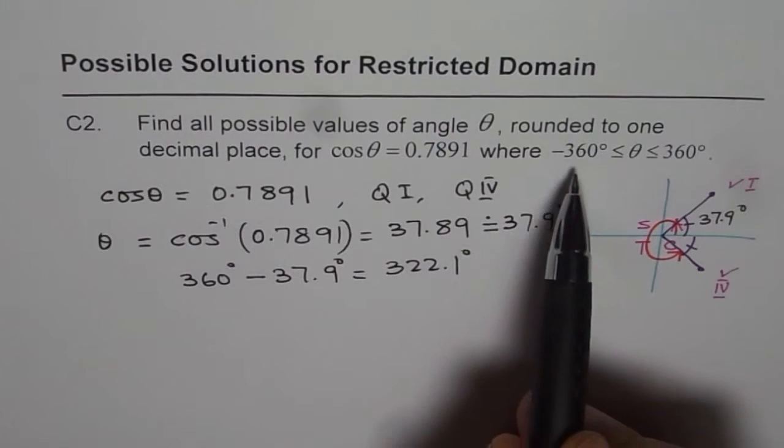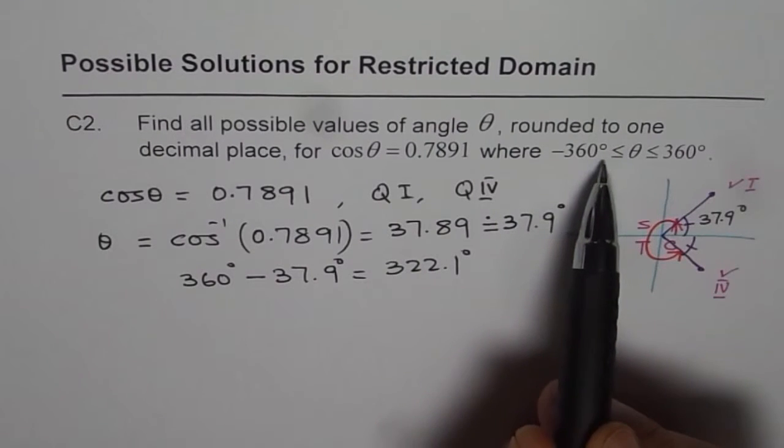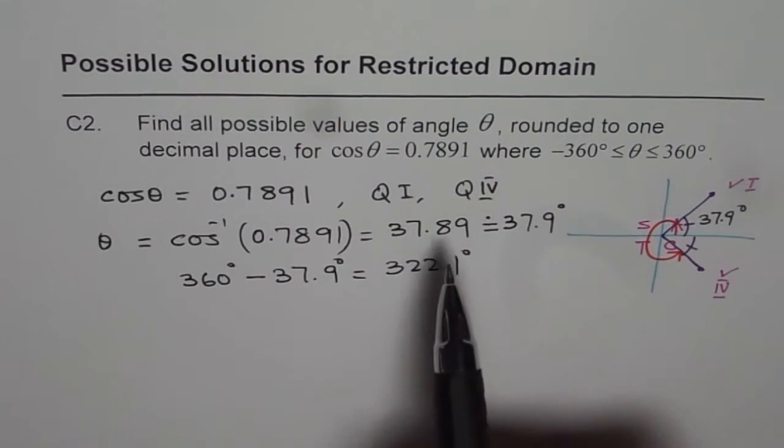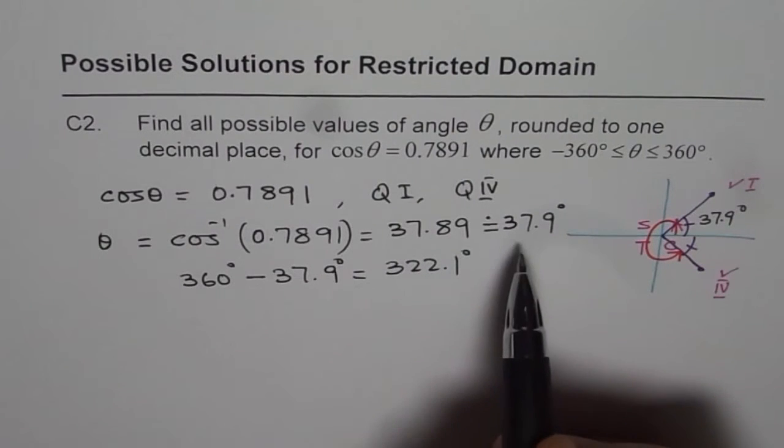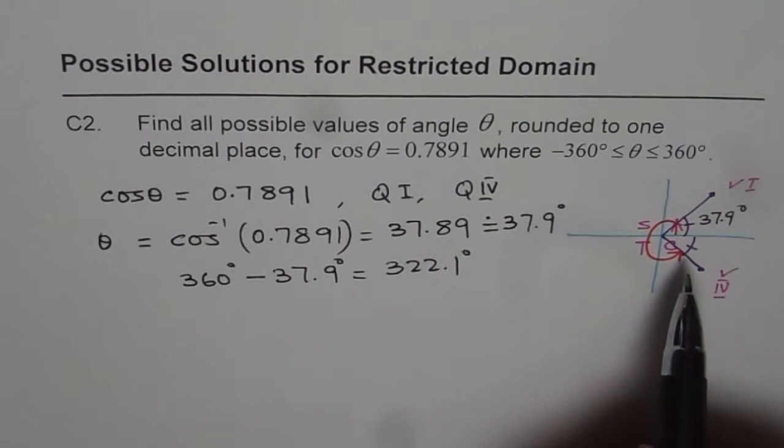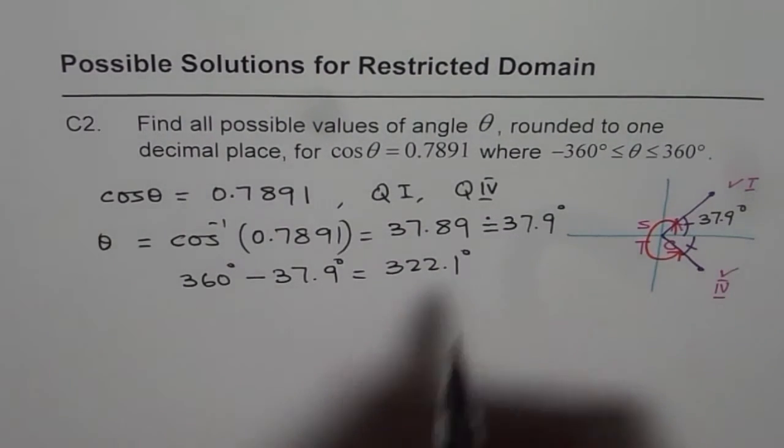Since we have restricted our domain from minus 360 to plus 360, we need to find all possible answers. Well, to get the answers between minus 360 to 0, what we should do is, we should take away 360 from these two values. Cosine function is a periodic function and the period is 360. That means it repeats after every 360.